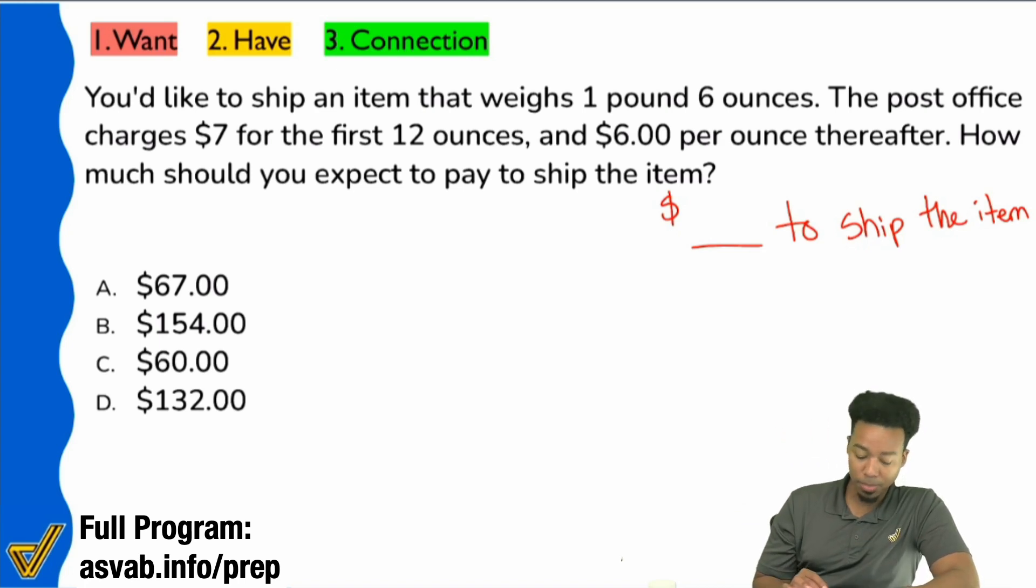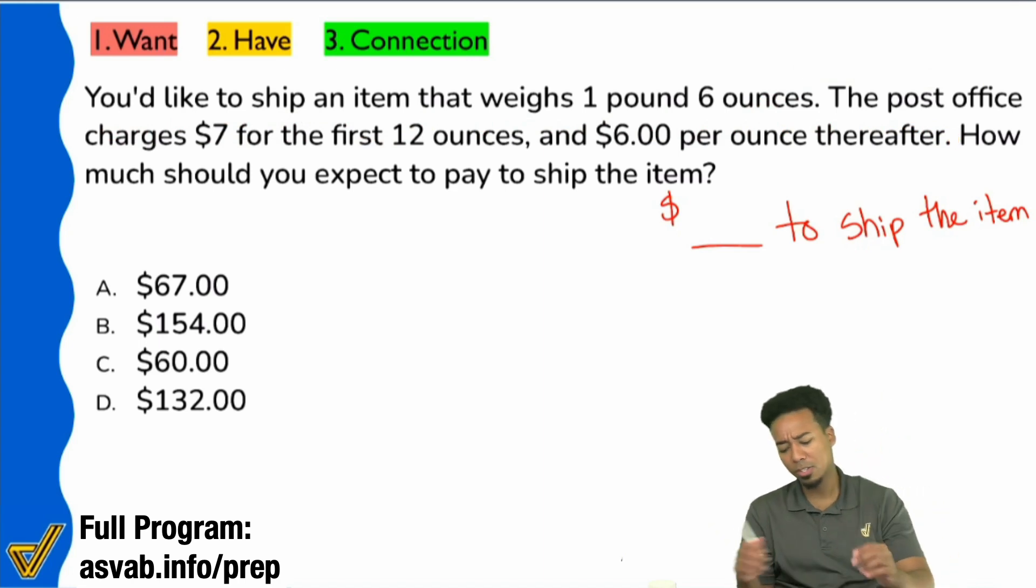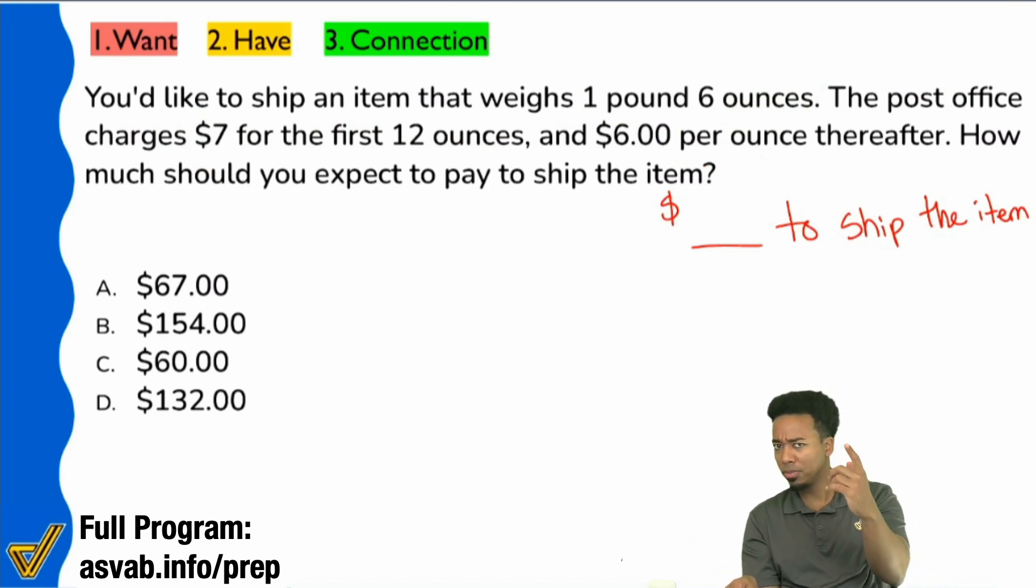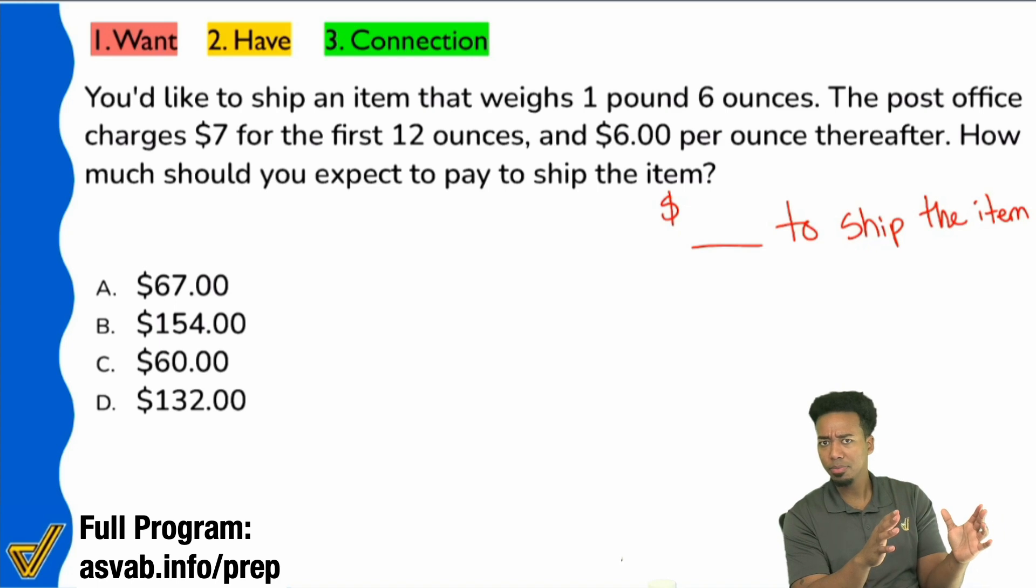So it says in the beginning, you'd like to ship an item that weighs one pound, six ounces. The post office charges seven dollars for the first 12 ounces and six dollars per ounce thereafter. So we want to know the cost to ship the item. I'd like to ship this item. This is how much it weighs. And then they charge me for the first 12 ounces, and then they charge me for the excess, the extra. Can we imagine that there's going to be a rule that we follow for those first 12 ounces, and then after 12 ounces, I follow a different rule?